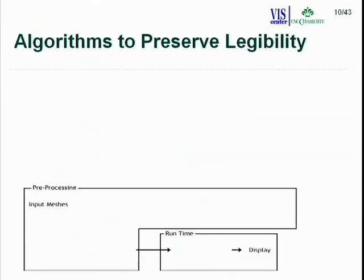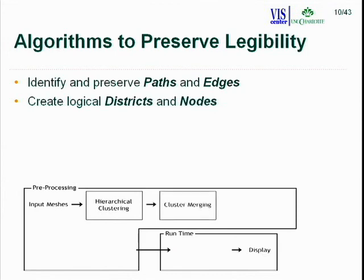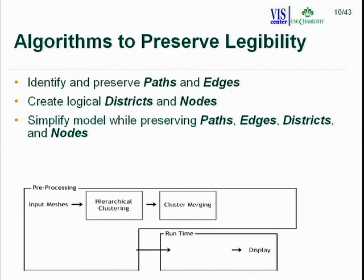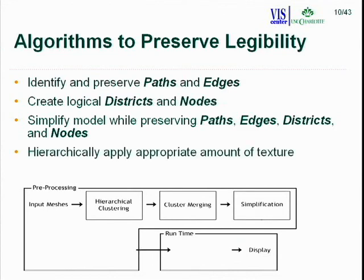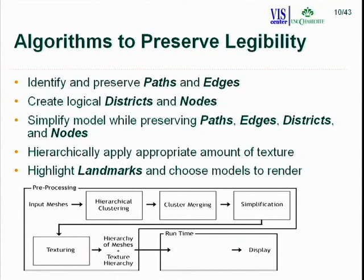Our algorithm has five steps to preserve legibility. First, identify and preserve paths and edges through hierarchical clustering. Second, create logical districts and nodes through cluster merging. Third, simplify the model while preserving paths, edges, districts, and nodes. Fourth, hierarchically apply appropriate texture. These four steps form the preprocessing stage, producing a hierarchy of meshes and textures, which feeds into the runtime process for landmark highlighting and appropriate model selection via LOD with landmark preservation.